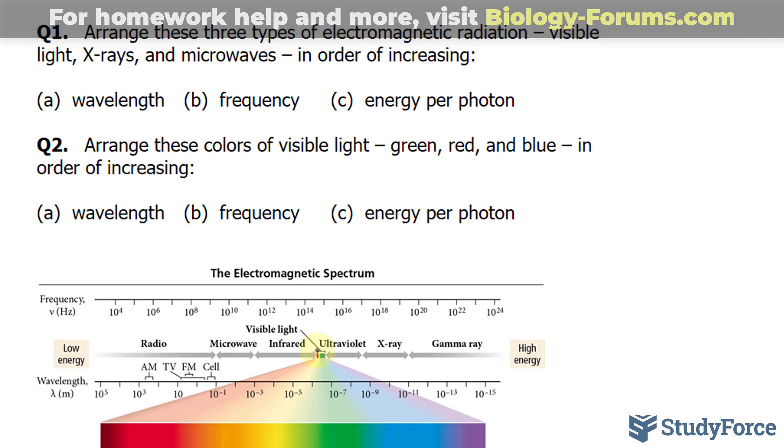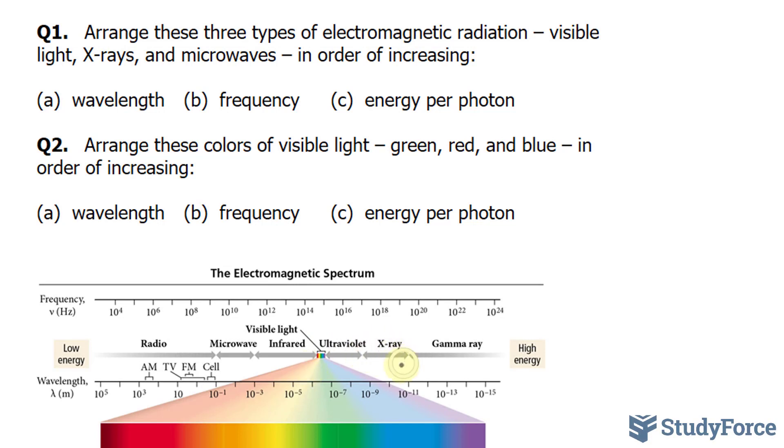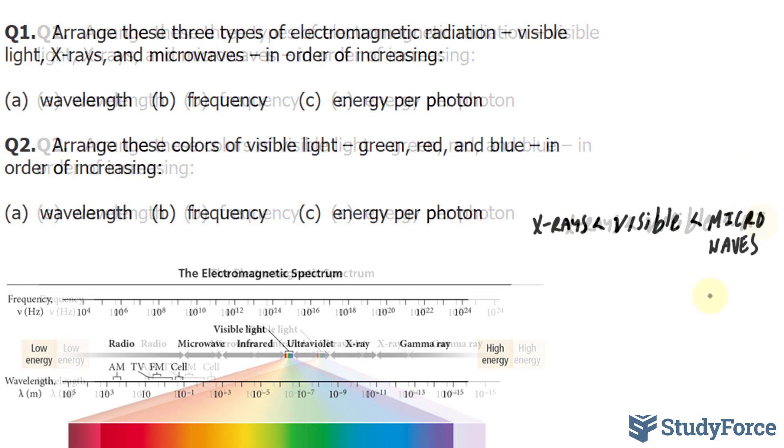Visible light is right here, X-rays are over here, and microwaves are over here. So we can say that visible light is greater than X-rays and is less than microwaves.